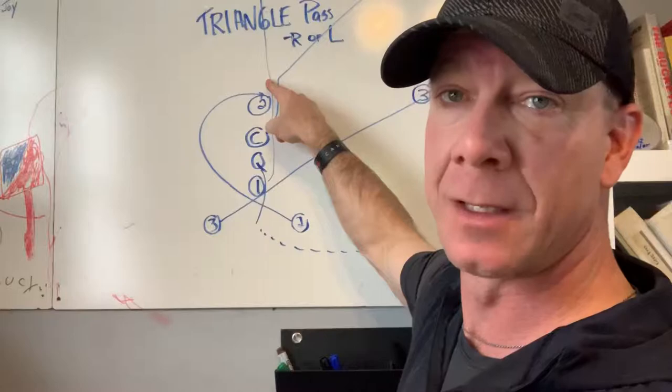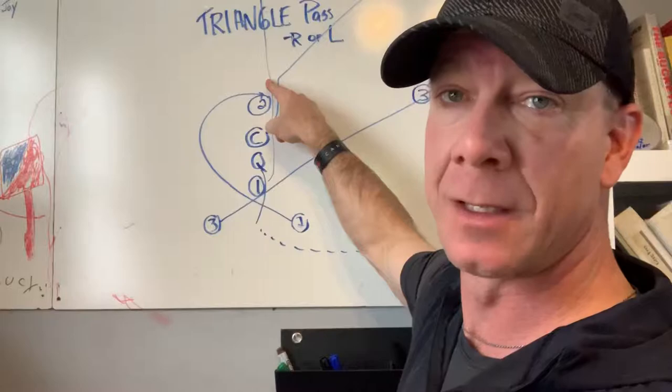We've always got our little square, so it's very easy for the quarterback. Should be pretty easy for the guys to get there, they just got to get to their spot and catch the ball. I'll teach the quarterbacks how to deliver it. So there you go, triangle pass right or left.